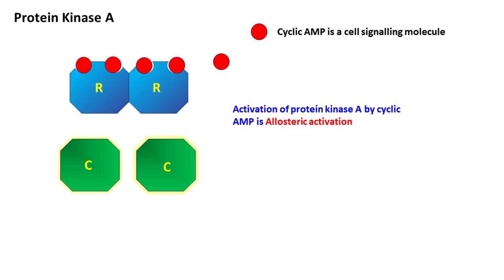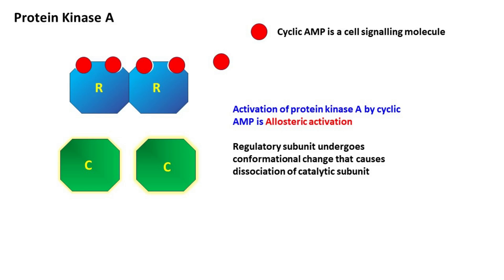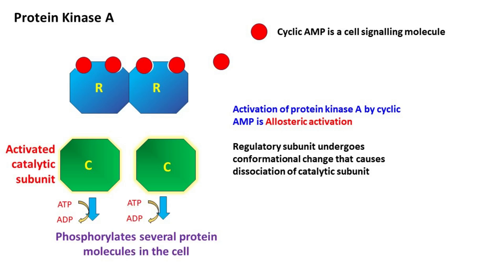Remember, the activation of protein kinase A in the presence of cyclic AMP is an allosteric activation. The regulatory subunit undergoes a conformational change and causes disassociation of two free catalytic subunits. The activated catalytic subunits of protein kinase A can phosphorylate a variety of protein molecules.